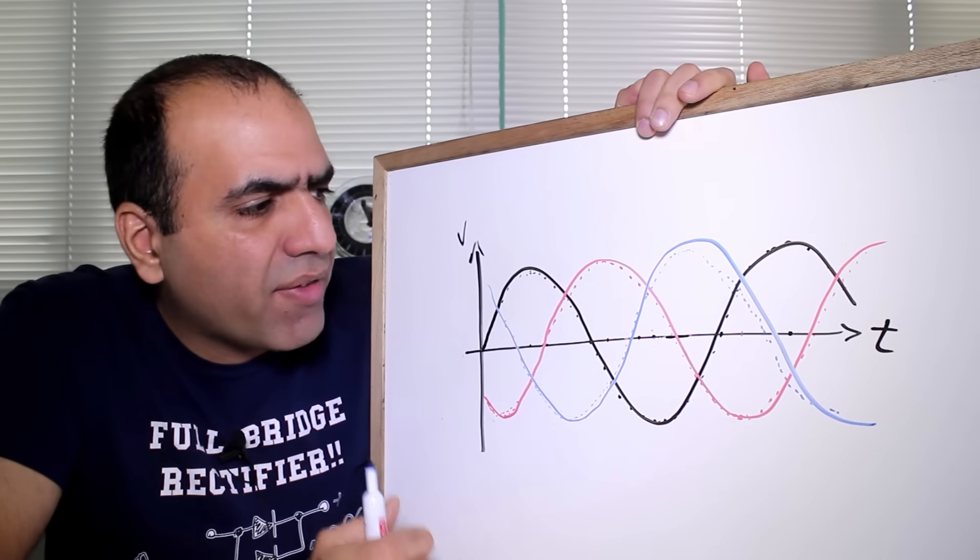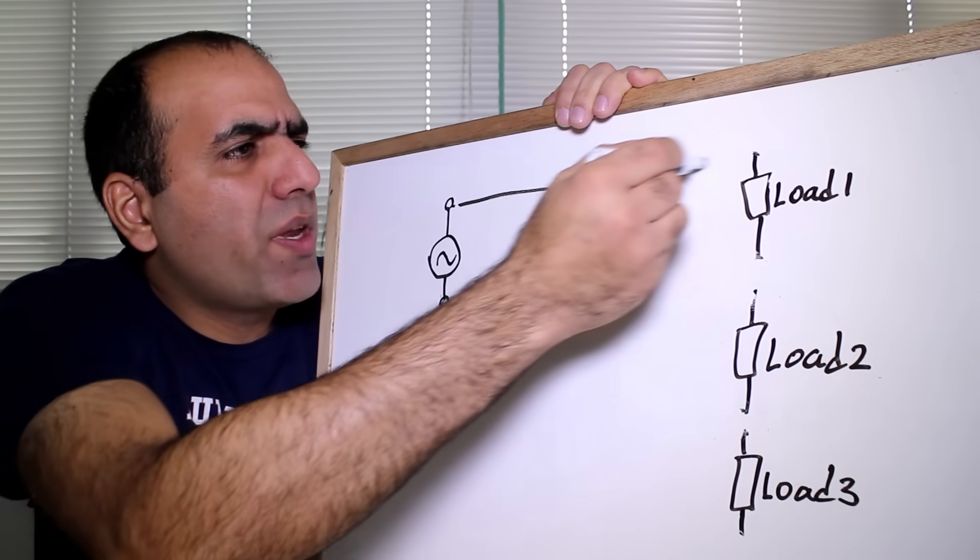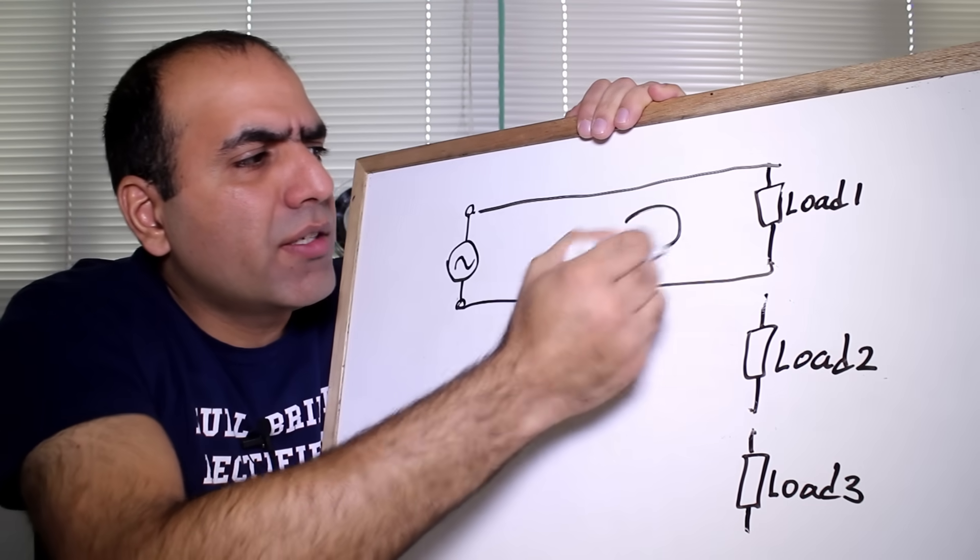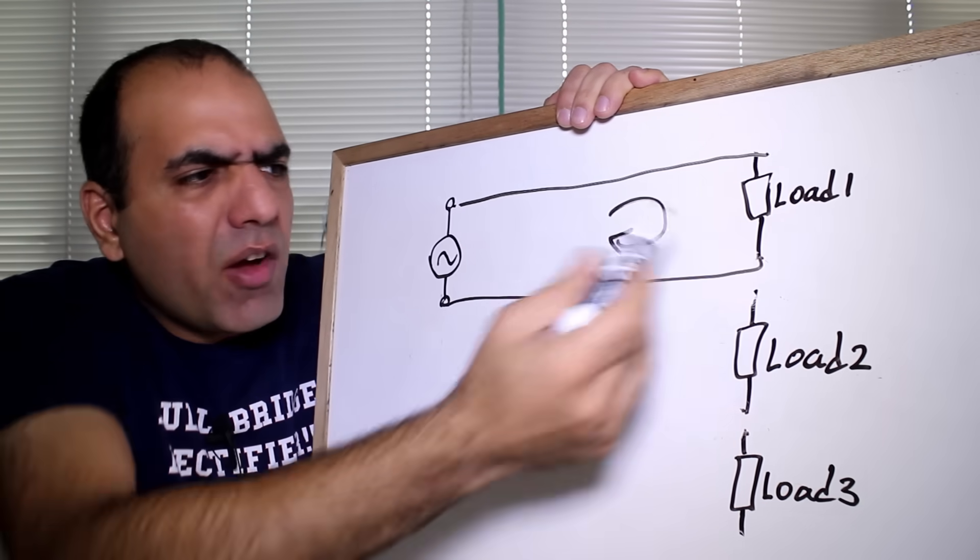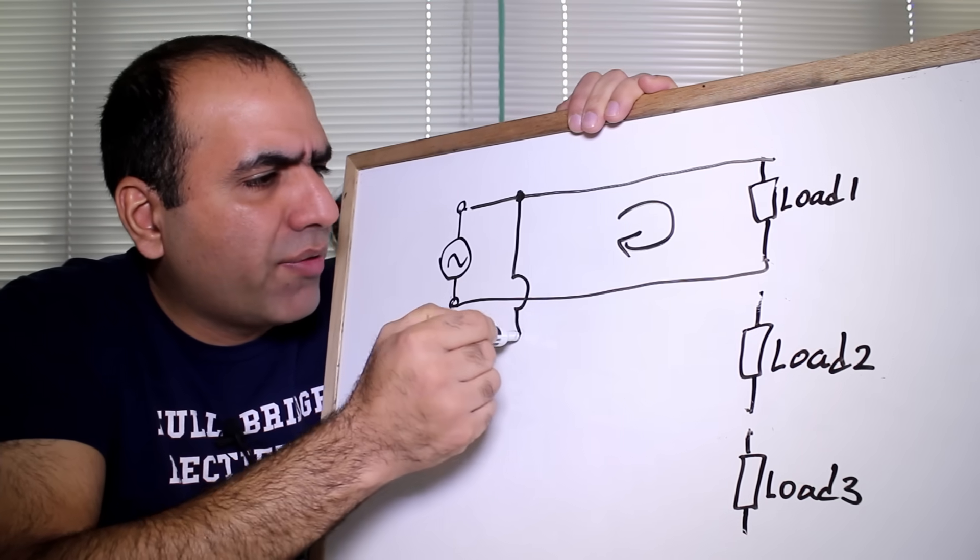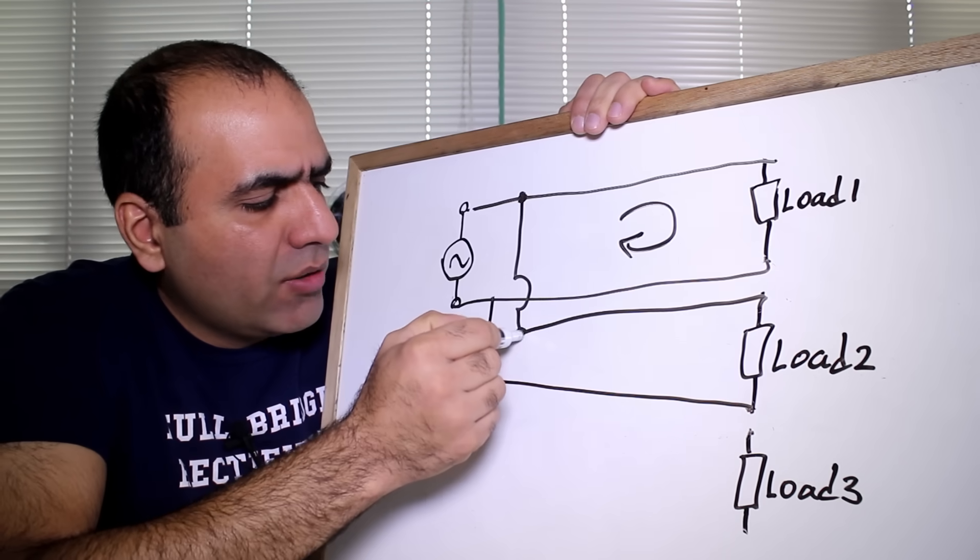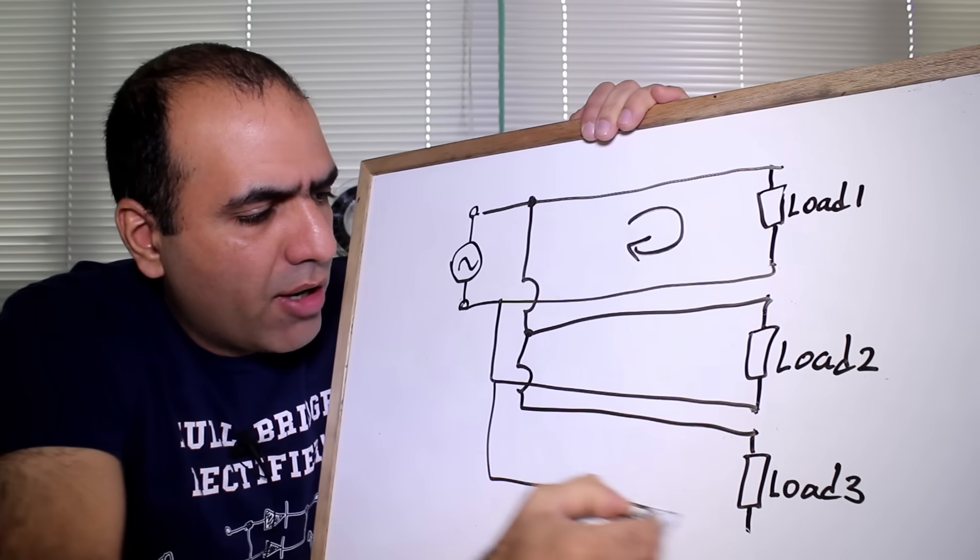Now let's talk about a couple of benefits. Imagine we have a single-phase AC. How many wires do we need to run one load? Two wires to close the circuit. Now imagine we have three loads. How many wires then? We need one pair to the first load, another pair to the second load, and another pair to the third load. So six wires in total.